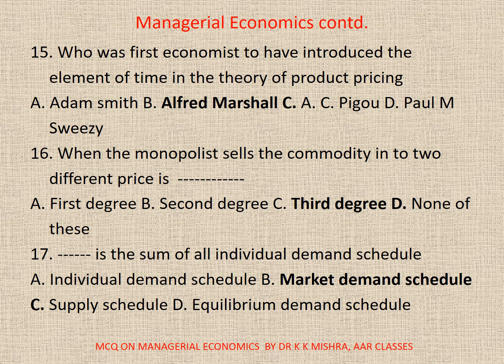17. Dash is the sum of all individual demand schedules: A. Individual demand schedule, B. Market demand schedule, C. Supply demand schedule, D. Equilibrium demand schedule. Correct option is B. Market demand schedule.